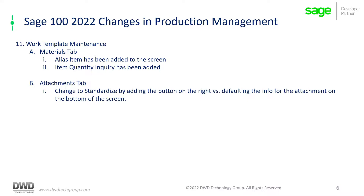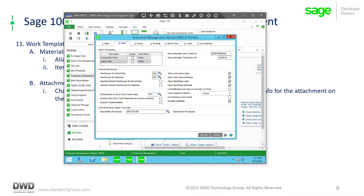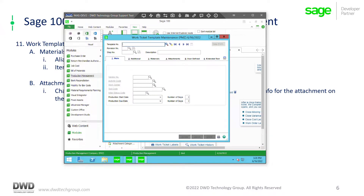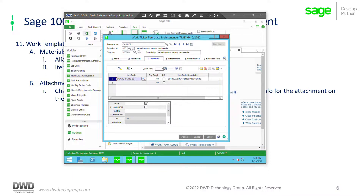Sage also made changes in work ticket templates. Looking at work ticket template maintenance and pulling up a template, you can see on the materials tab they've added two standard features found in most other data entry screens involving inventory items: the alias items button, which was not there before, and the item inquiry, which was also not there before.